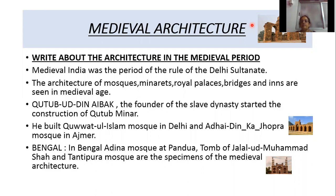Qutbuddin Aibak was the founder of the Slave dynasty in India and he constructed Qutub Minar. He also built the Quwwat-ul-Islam Mosque in Delhi and the Adhai Din ka Jhonpra Mosque in Ajmer. That mosque was built within two and a half days, which is why it is called Adhai Din ka Jhonpra. It is located in Ajmer.